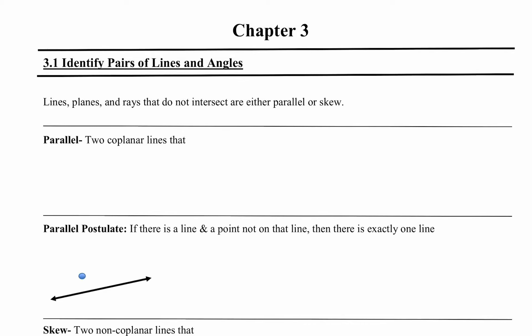Today we're talking about identifying pairs of lines and angles. We're going to talk about lines, planes, and rays, and whether they intersect, don't intersect because they're parallel, or skew. We're going to start off with the first term: parallel, which means two coplanar lines that do not intersect.